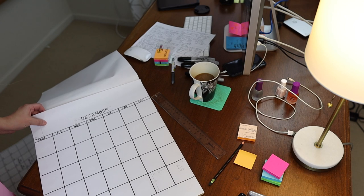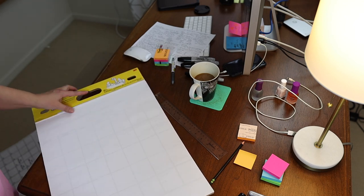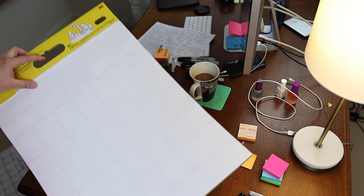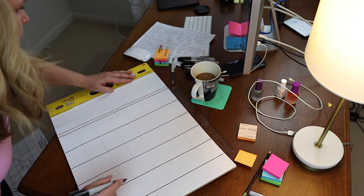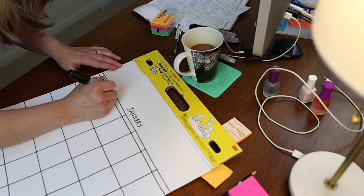Now in theory, we should be able to use the calendar we just created as a template, and now you can see through it, and all we really have to do is use the Sharpie to go over these lines.